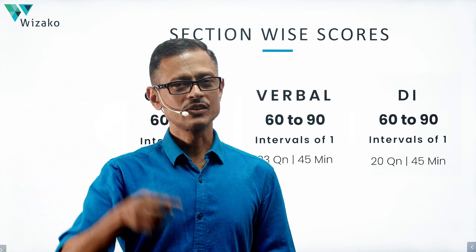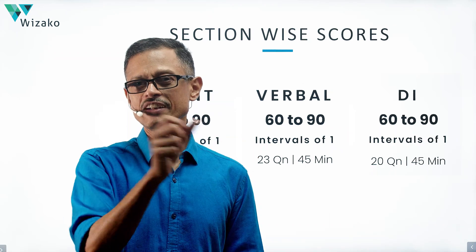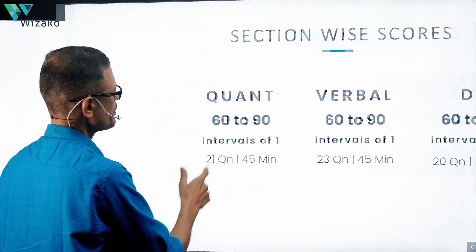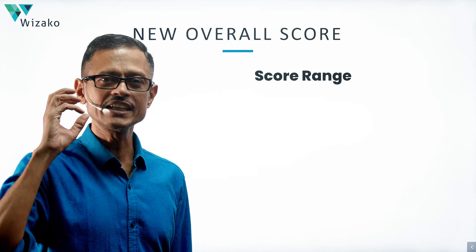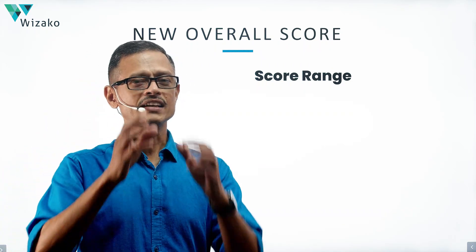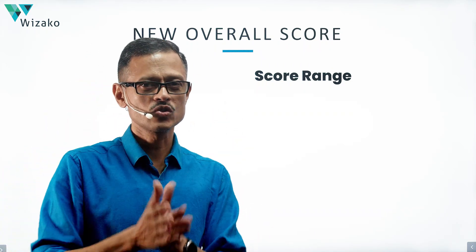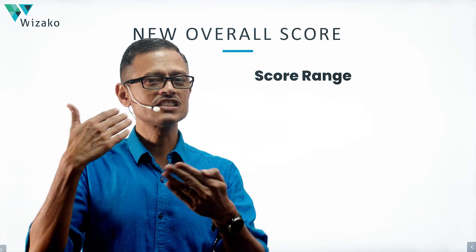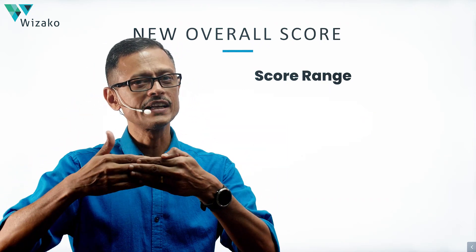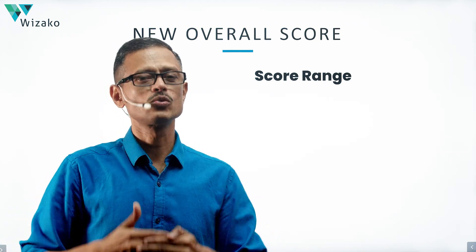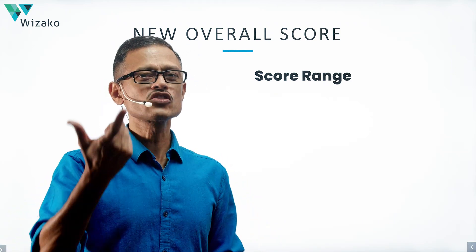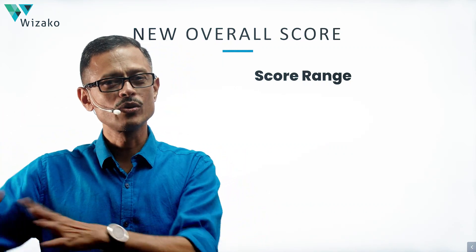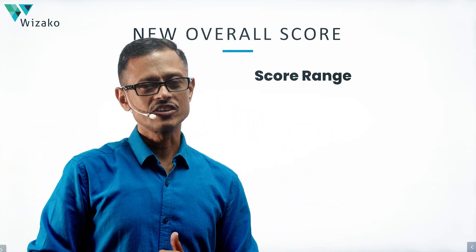What happens to the overall score? Is it going to be the same as the old test — between 200 and 800? No, there is a change there too. GMAT has brought about this change essentially to signal to business schools which version of the test was taken, because the GMAT score is valid for five years. So there will be a period when both the old GMAT and the GMAT Focus Edition scores are valid simultaneously. By looking at the score, a business school should be able to tell whether a student took the Focus Edition or the older version.